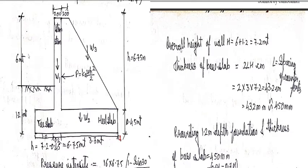So that is what we have shown. Overall height of the wall H is equal to 6 plus 1.2 which is 7.2 meter. You can see here 6 plus 1.2 is equal to 7.2 meter shown here.